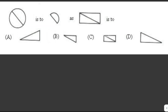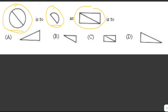We are given a shape analogy: a circle cut in half gives a semicircle. Applying the same logic, a rectangle cut in half should give half a rectangle. Looking at options A, B, C, and D, only option B looks exactly like half of the rectangle. The answer is B.